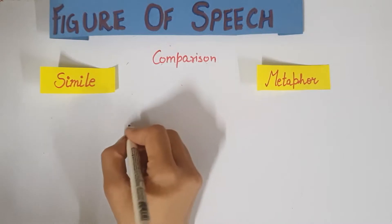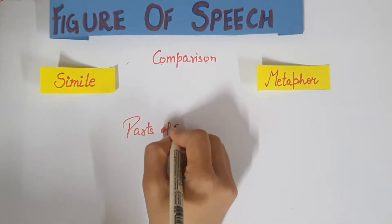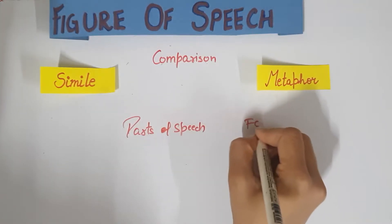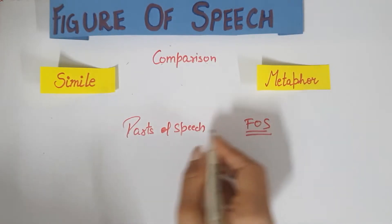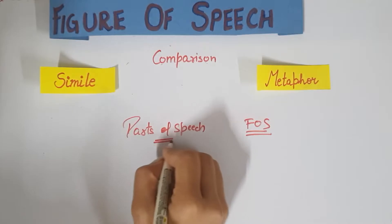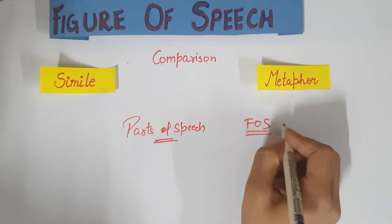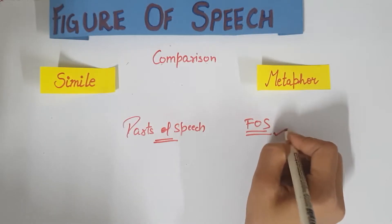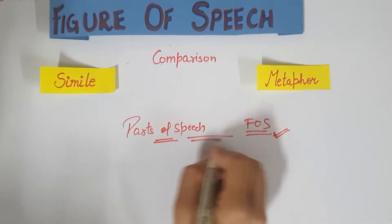One more thing — in grammar there is 'parts of speech' and there is 'figure of speech,' which is what we are talking about now. In parts of speech we talk about normal sentences, and in figure of speech we talk about sentences where we are creating imagination or expressing sentences in a more expressive way. So don't get confused between them.